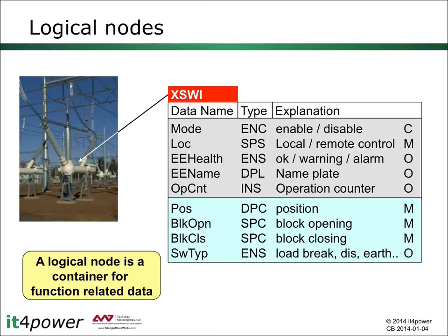We have a first group of data objects defined with a light blue background, which includes, for example, the data object POS representing the position of the switch, or a data object block opening which represents that the block opening is blocked. We also see the indication M for mandatory or O for optional, whether the particular data object needs to be present or not. The second group of data objects, shown with a light gray background, are data objects more used to control the behavior of a logical node rather than for the specific semantics of the logical node type.